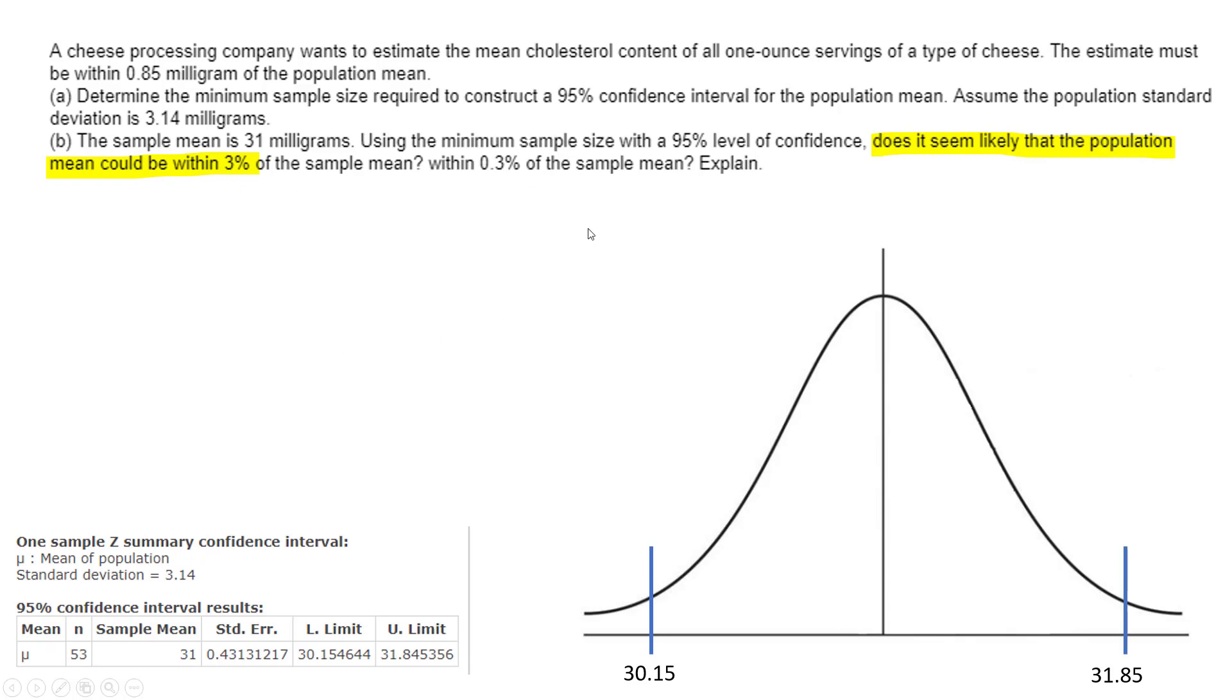So then they want you to say, does it seem likely that the population mean could be within 3% of the sample mean? Well, find 3% of the sample mean and create a new lower and upper interval and see if you're in that interval and you're not.